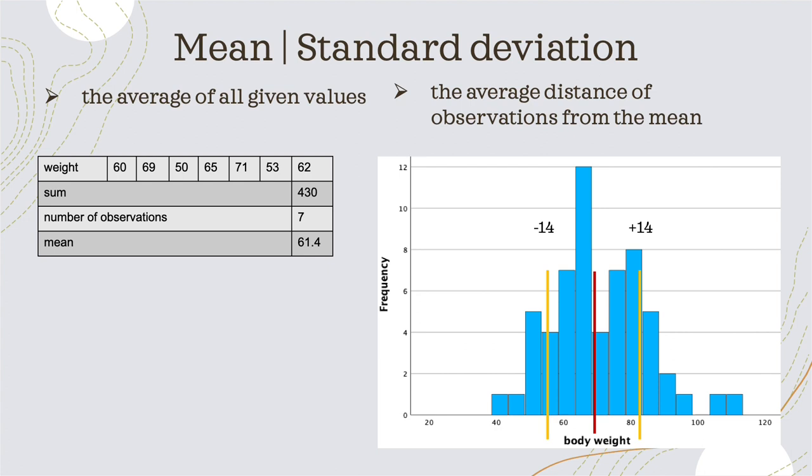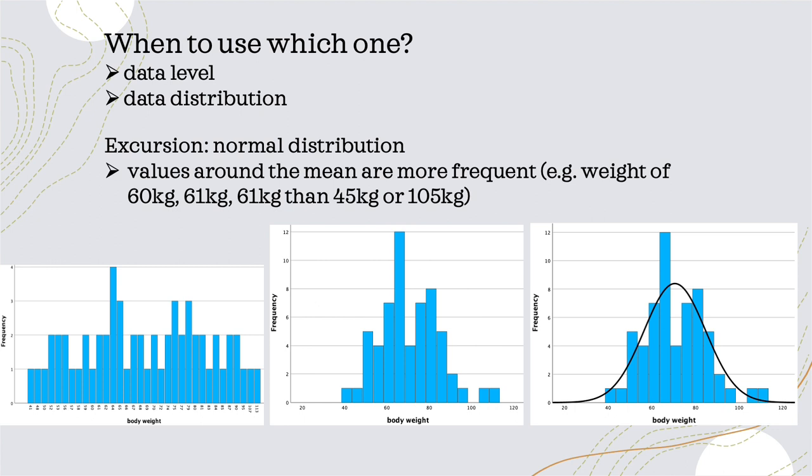Basically, it is the distance of each individual value to the mean, over which we build the average. The formula is a little more complicated, but that is the basic concept.